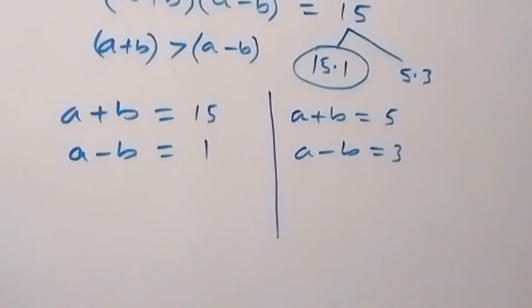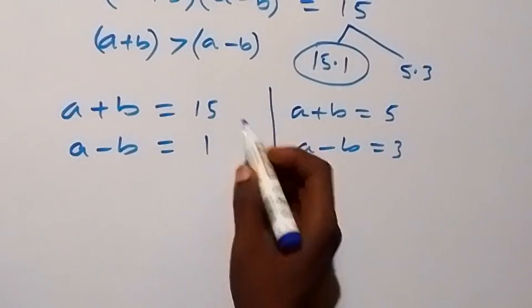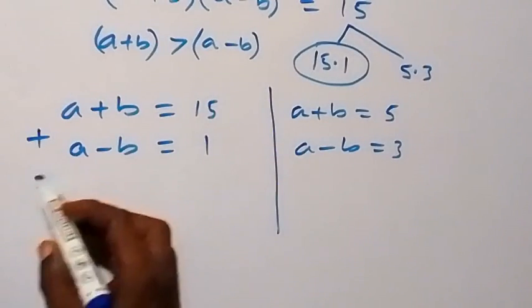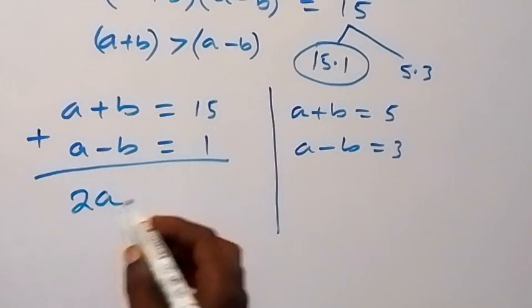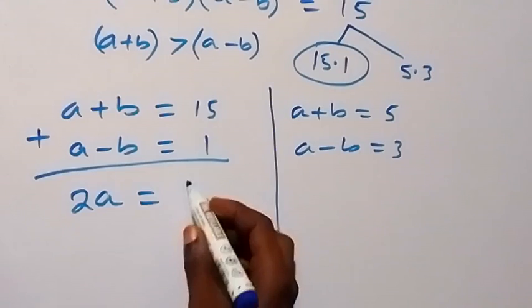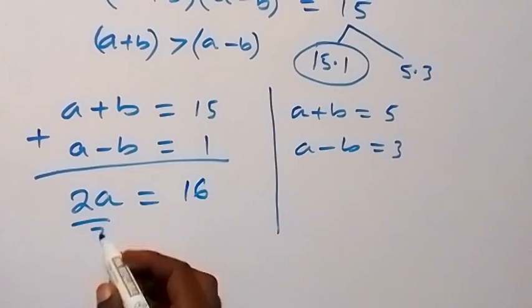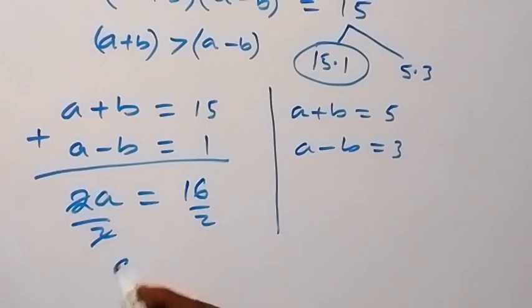Now let's solve this first case simultaneously. We can add these two equations to eliminate b, so a plus a will give us 2a equals 15 plus 1, which is 16. Divide both sides by 2, then a equals 8.